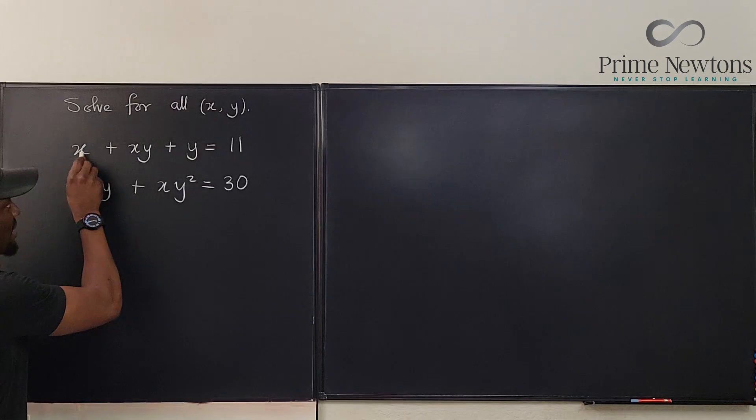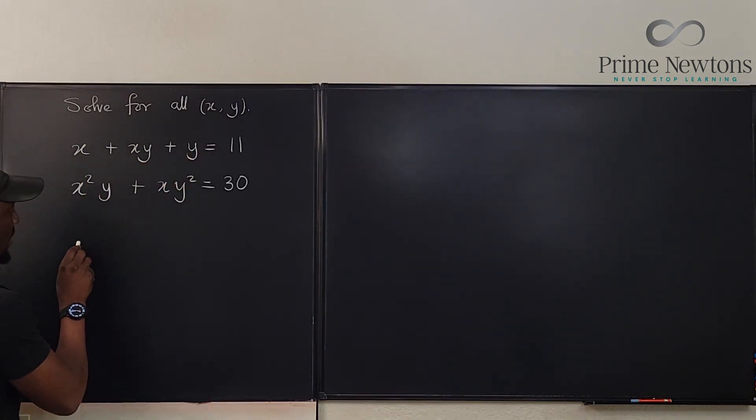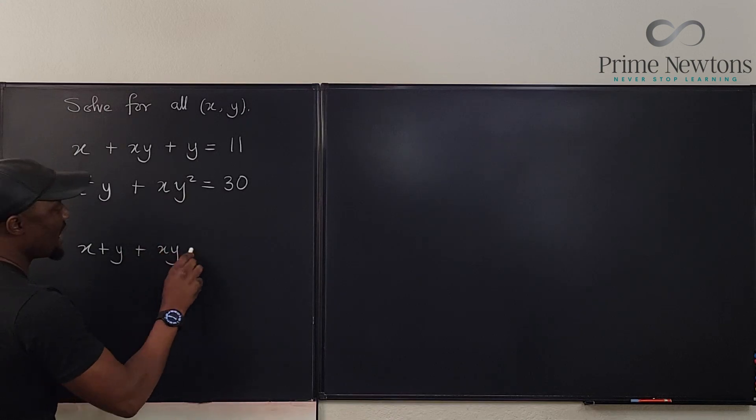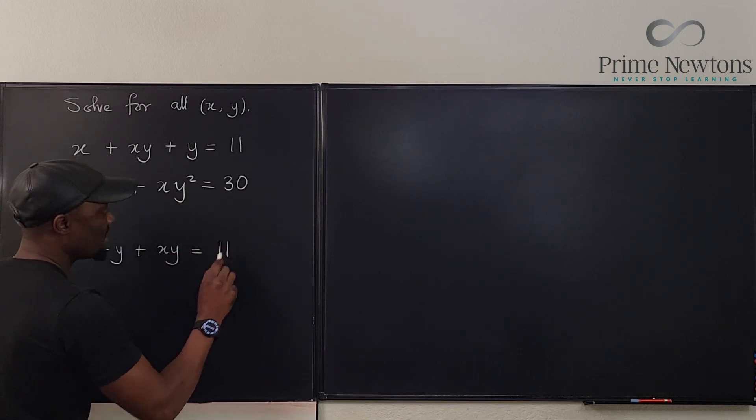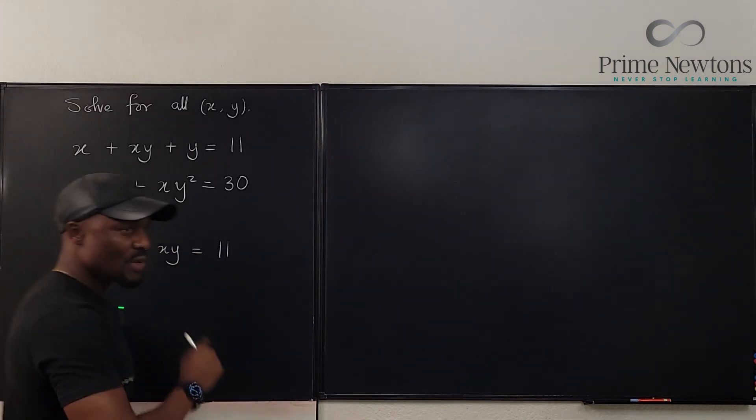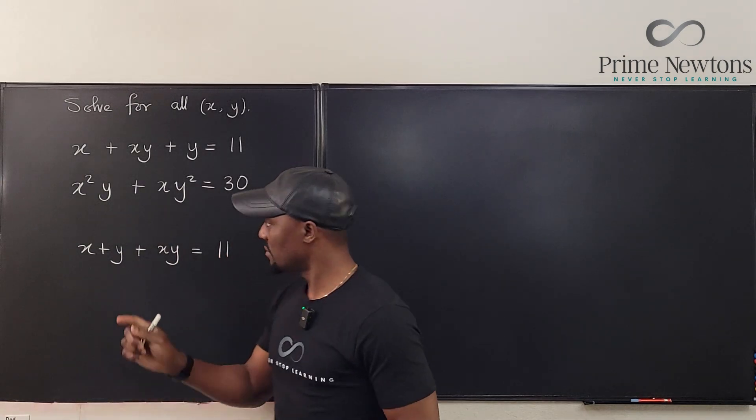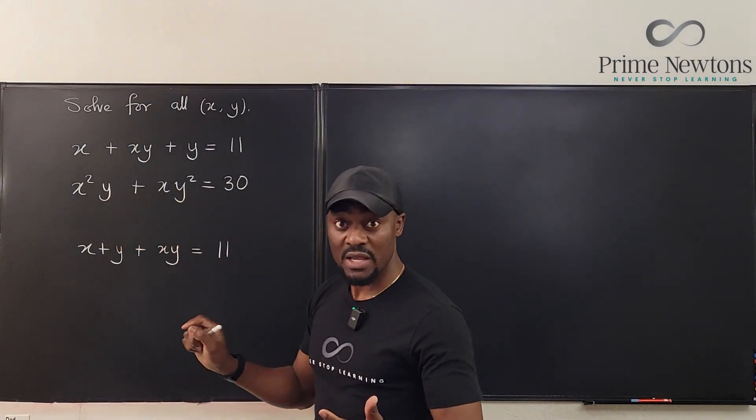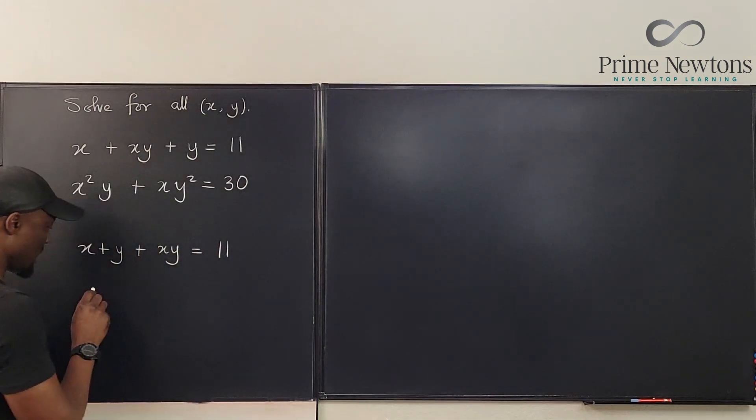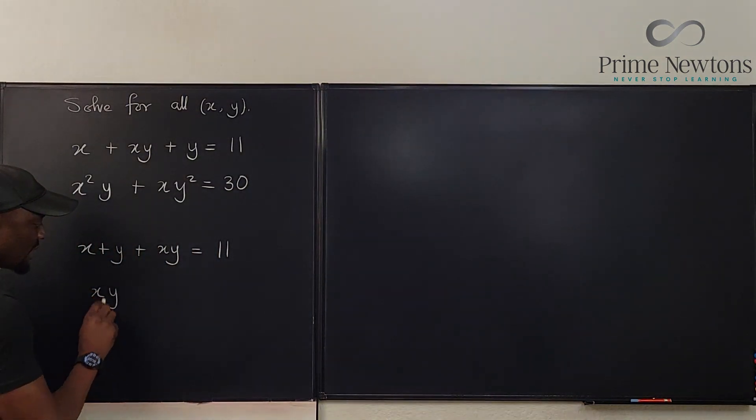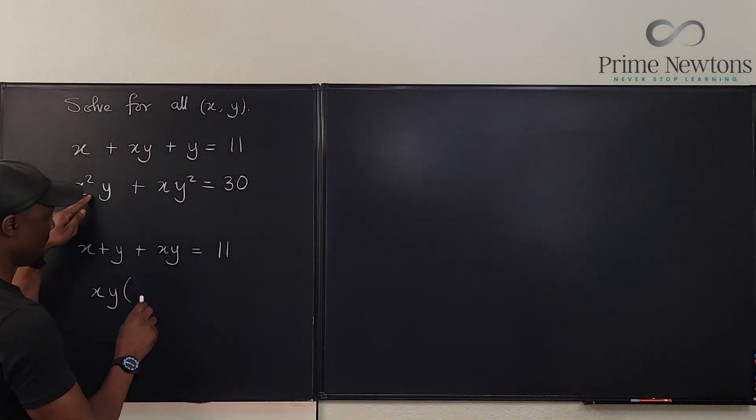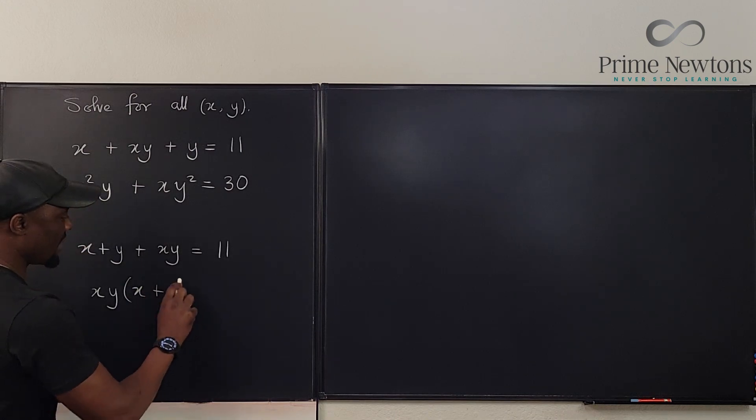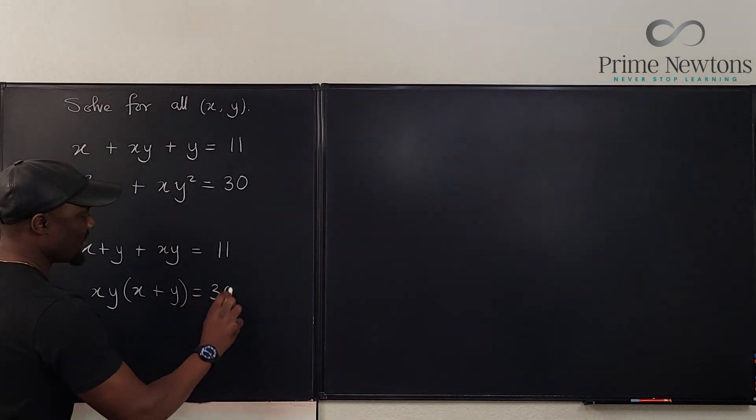So let's try and rewrite each of these equations in a way that makes it easy. What if we put these two together? We have x plus y plus xy equals 11. Can we do any factoring for the second one? What's common to this and this? xy is common. So we might as well say xy factored out, what's going to be left is going to be x plus y equals 30.